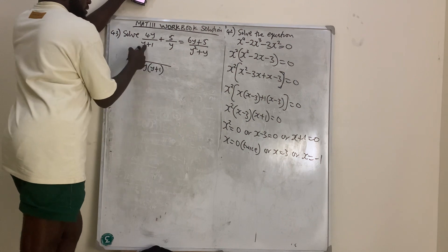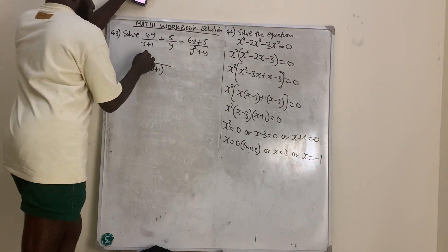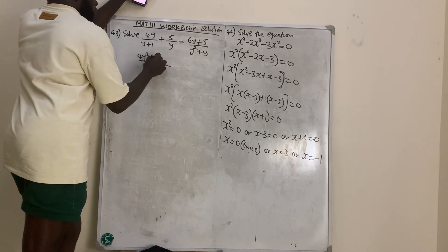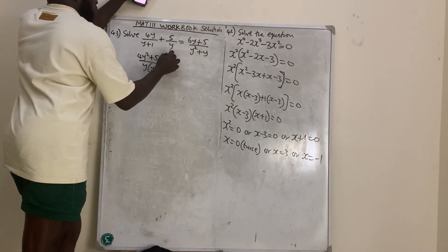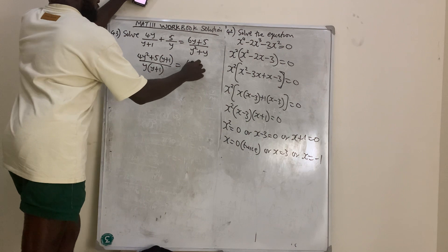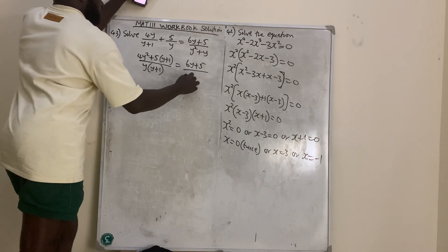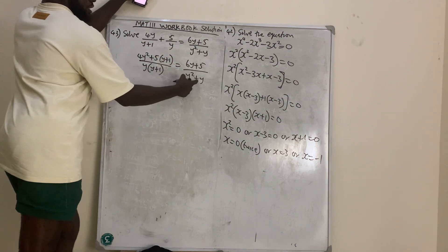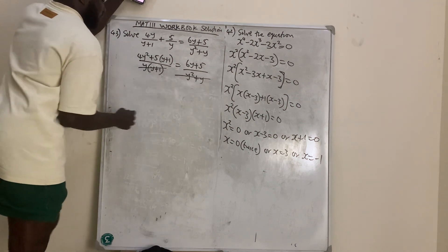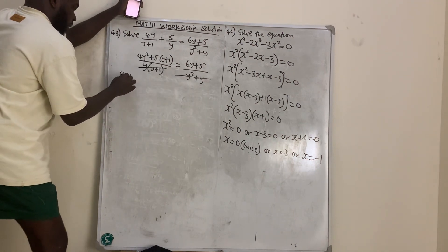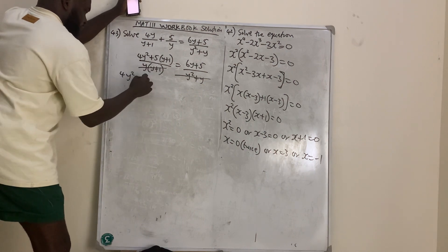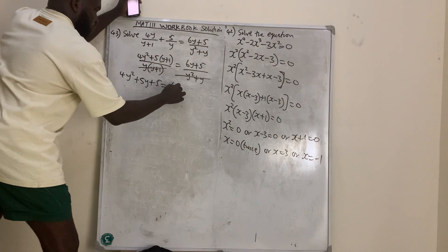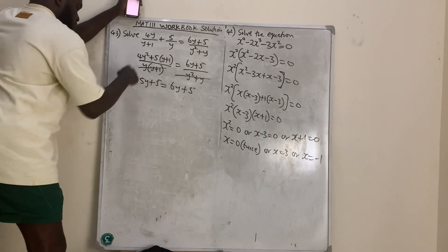Multiplying through by the LCM: y times 4y squared gives 4y squared, and (y plus 1) times 5 gives 5(y plus 1), all equal to (6y plus 5) over (y squared plus y). Opening the bracket, we get 4y squared plus 5y plus 5 equals 6y plus 5.